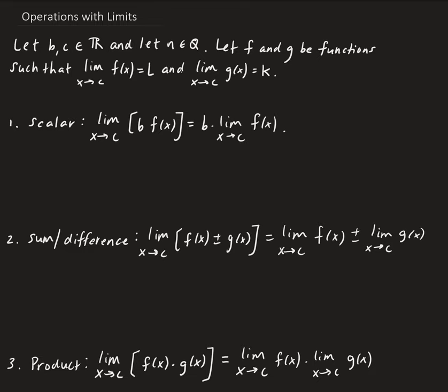And let N belong to Q. Q is just a mathematical description of the set of rational numbers. A rational number, for example, is basically like one-half, negative three-fourths, even two — you can write two as two over one, so that's considered a rational number. We're going to define F and G to be functions such that the limit of F of X as X approaches C equals some value L, and the limit of G of X as X approaches C equals another value K. So L and K are basically just numbers here, and both limits have finite values.